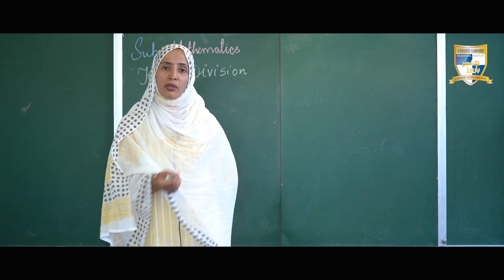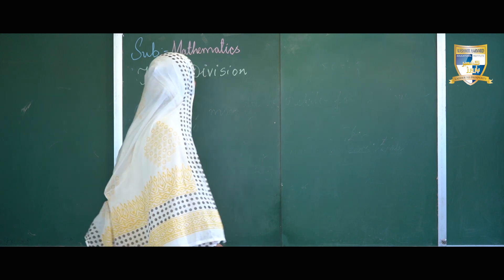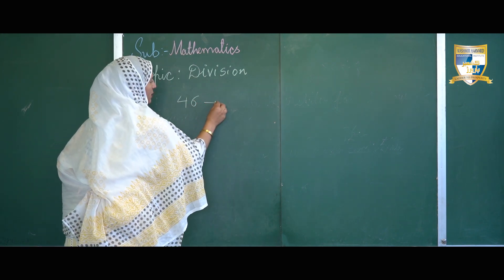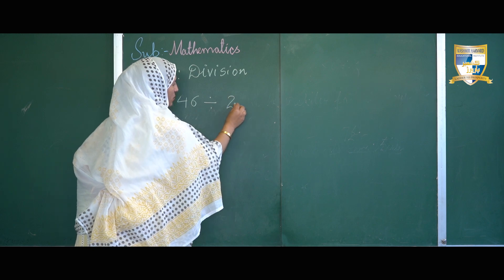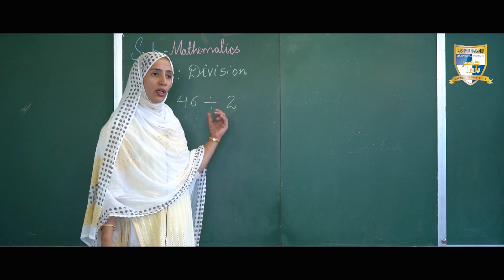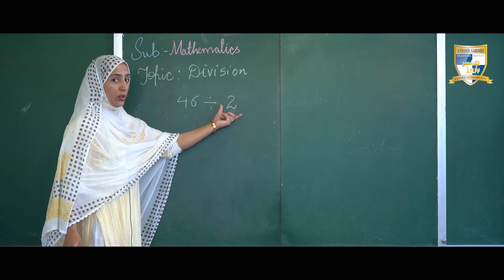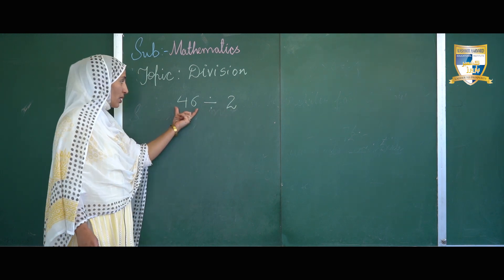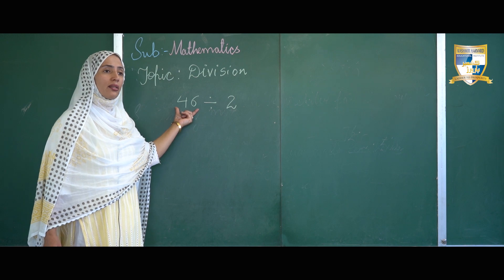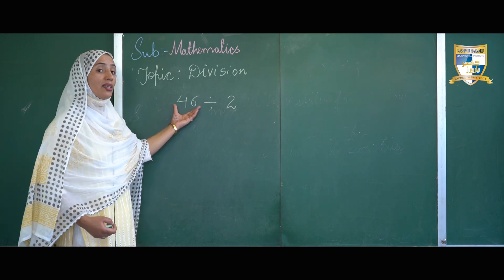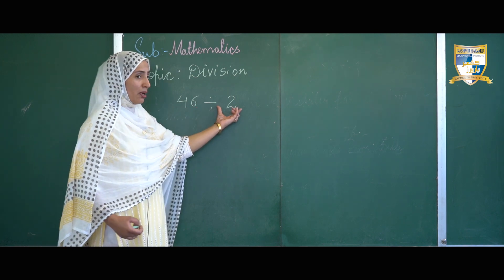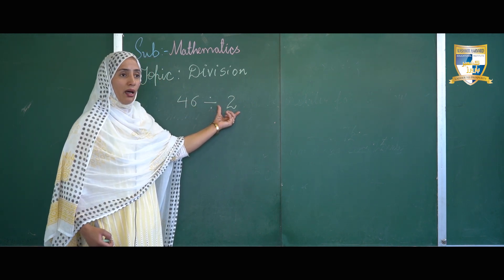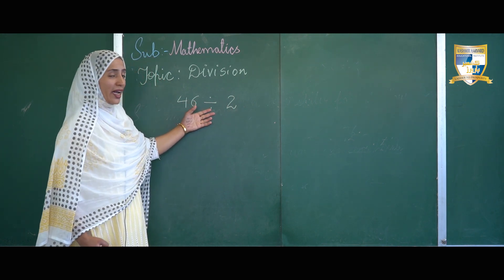Let's work on some division problems. I'll take 46 divided by 2. Here you can see we have two numbers: 46 and 2. Now, 46 is the number that we are going to divide, so it is the dividend. 2 is the number that will divide 46, so 2 is the divisor. In between these two numbers, we have the sign of division.